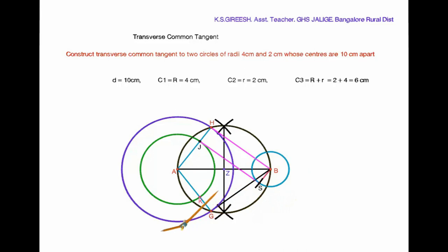Repeat the same procedure with K as center. JS and KR are the required transverse common tangents.